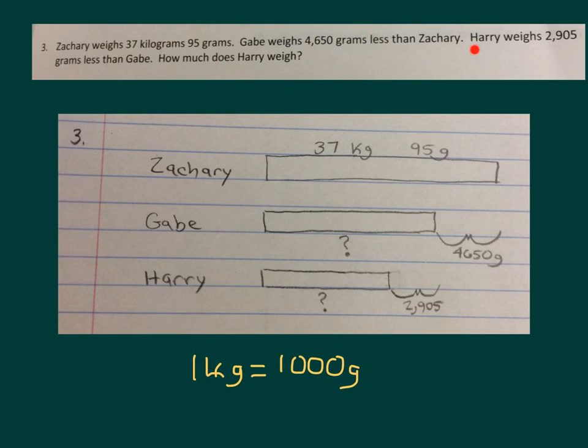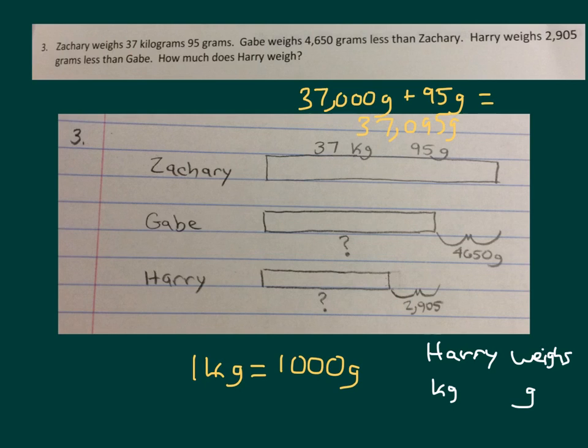Next, after you're done with that, it says Harry weighs 2,905 grams less than Gabe. That's why Harry's bar is less than Gabe's bar, and it's less than Gabe's bar by that 2,905 grams. What I suggest that you do is rename 37 kilograms to 37,000 grams and put it together with the 95 grams to get 37,095 grams for Zachary's weight, and then you solve it from there. When you're expressing your answer at the end for the amount that Harry weighs, please express it in kilograms and grams. So you will have to rename again.